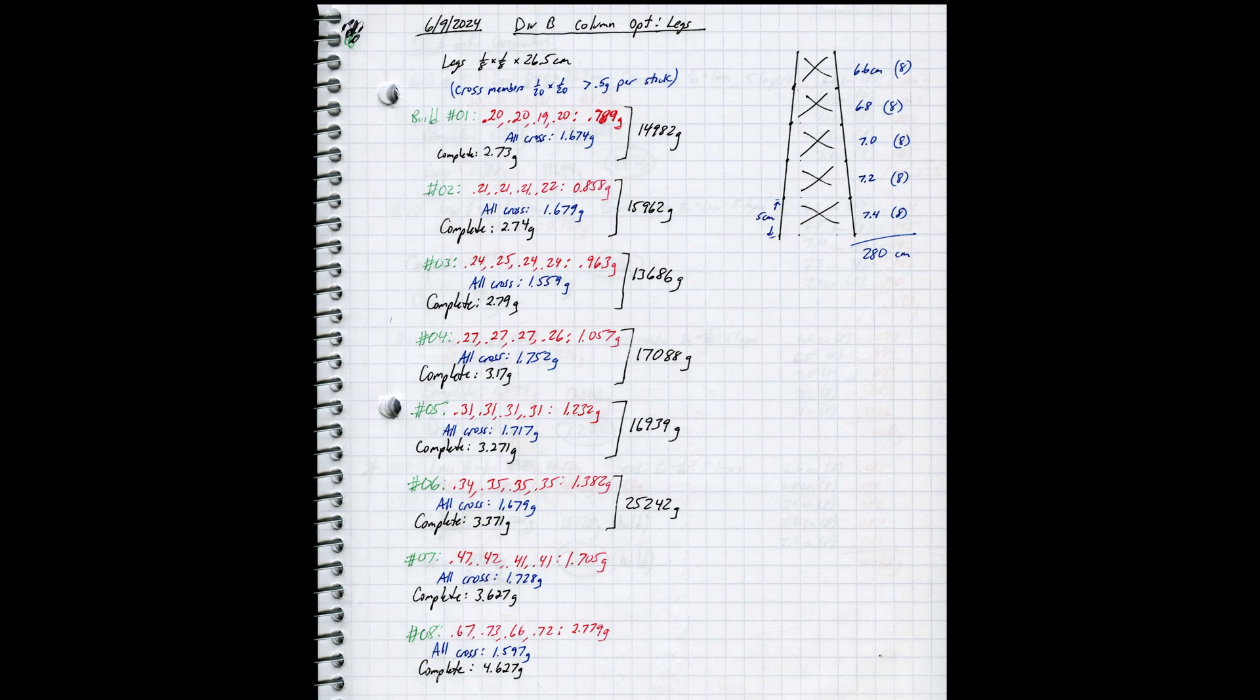Here is my notebook page for all 8 of these initial column builds. Let's see if we can draw any conclusions from the data. While the leg strength versus mass wasn't as consistent as I'd hoped, I think we can learn a few things from all these tests. Perhaps the most obvious thing is that if your completed column is anywhere near 3.5 grams, it is way overbuilt and I would expect builds in that range to hold much more than our maximum of 15 kilograms.